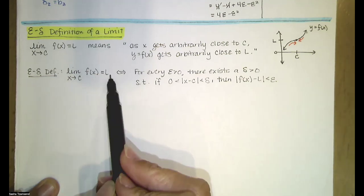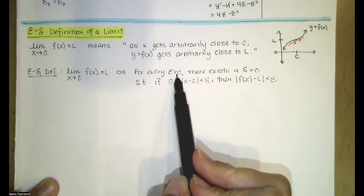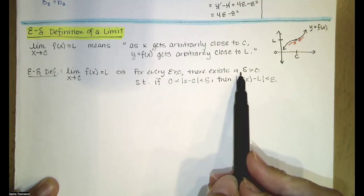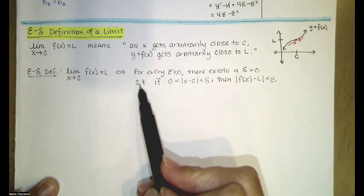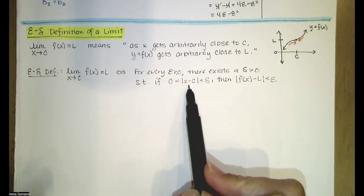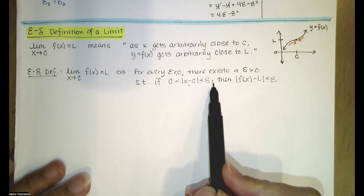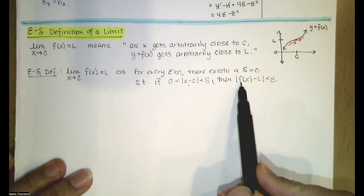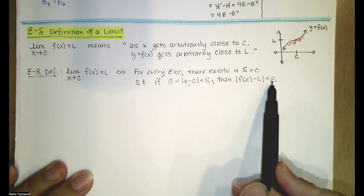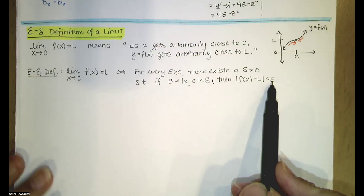This means that for every epsilon greater than zero, there is a delta greater than zero, such that if zero is less than the absolute value of x minus c, which is less than delta, then the absolute value of f(x) minus L is less than epsilon.